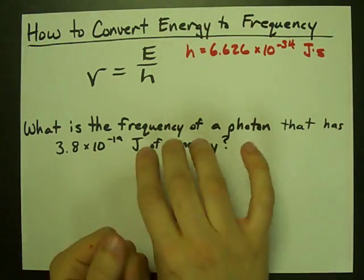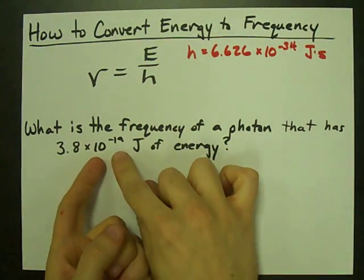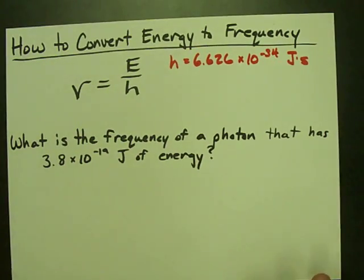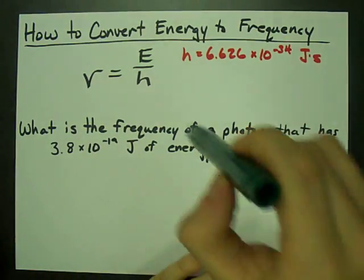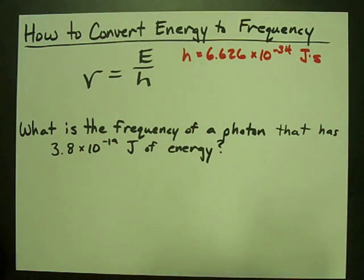How do you calculate frequency if all you're given is the energy of a particular photon? The answer is take your energy and divide it by Planck's constant.